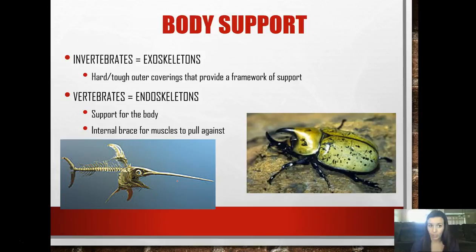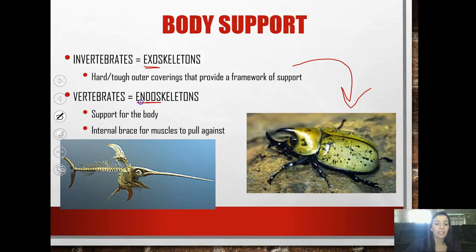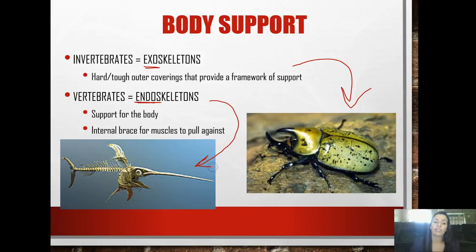In terms of body support, invertebrates have something called an exoskeleton, meaning outside. This is just a hard, tough outer covering. As you can see in this beetle, it has an exoskeleton - that's why when you squish a bug, it usually crunches. Vertebrates, on the other hand, have endoskeletons. This gives internal support for the body, like this fish here, and helps with the muscles for them to attach and pull against.